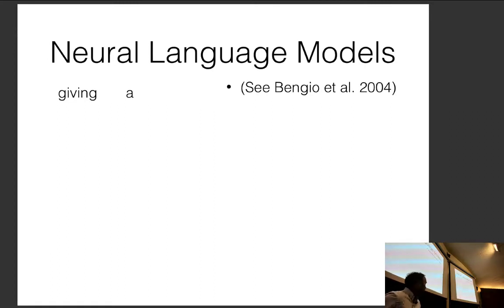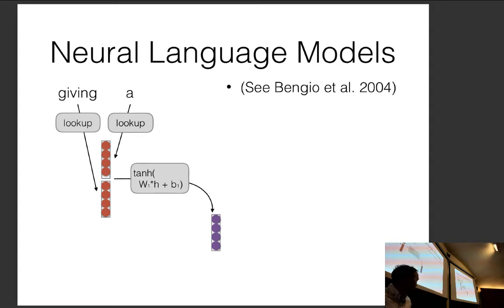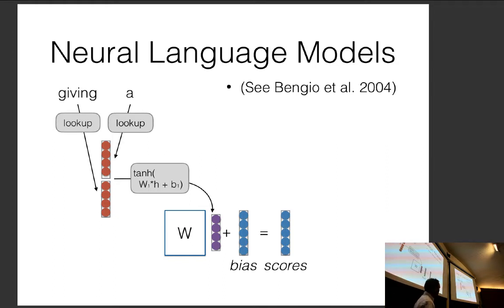Neural language models, introduced by Bengio et al. in 2004, work by looking up embedding vectors for the input words rather than scores directly, running them through a non-linearity or multiple non-linearities to extract features, then multiplying by a weight matrix, adding a bias, and getting scores. This looks exactly like the text classification architecture from last class, with one small change: instead of summing embeddings element-wise, we concatenate them. Concatenation allows the model to consider word order by treating each position's embedding separately.